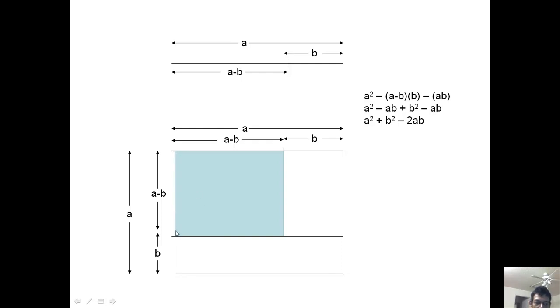So the length, the square, a minus b whole square is going to be the area of this square, the big square which is a square minus the area of this rectangle minus area of this rectangle.